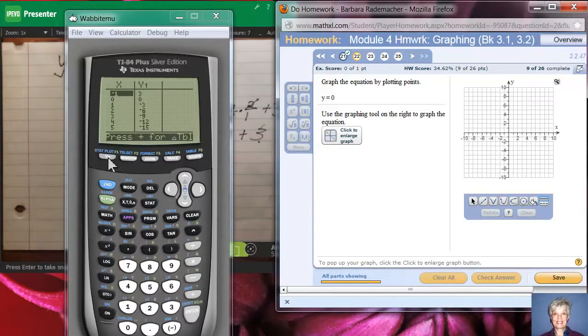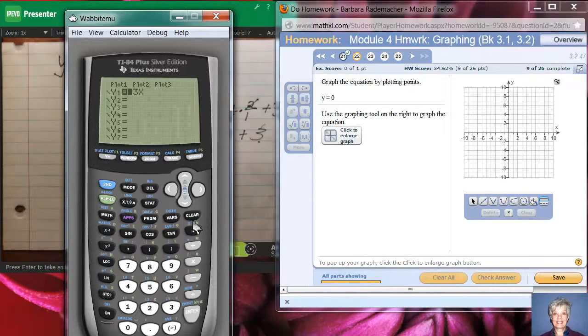All right, I'm going back to y equals and I'm going to hit clear. Now I'm going to do something else sneaky first, because it'll be hard. I know what this looks like already, and I know it'll be hard for you to see if I don't do something to make the line more visible.